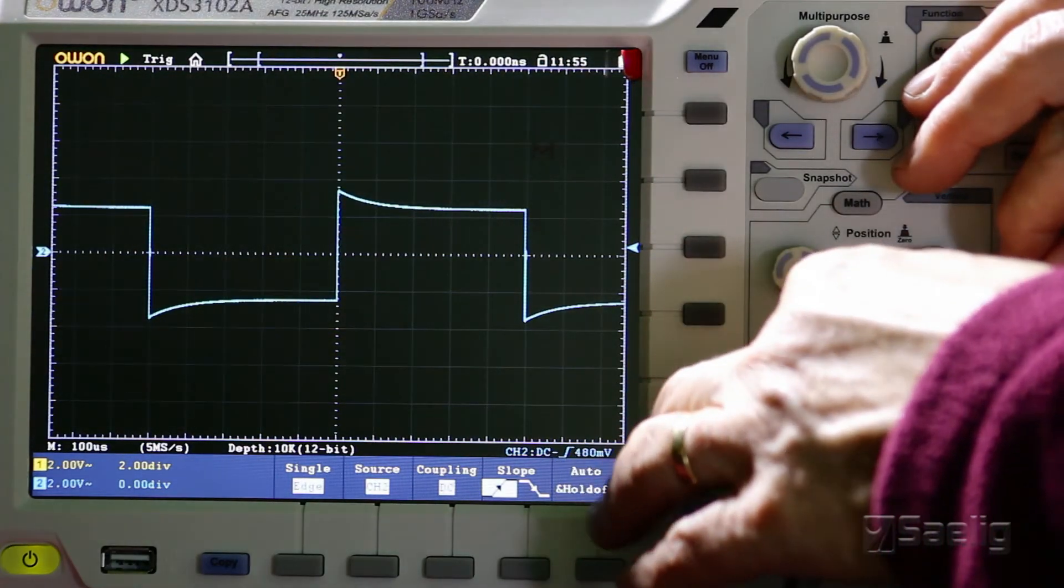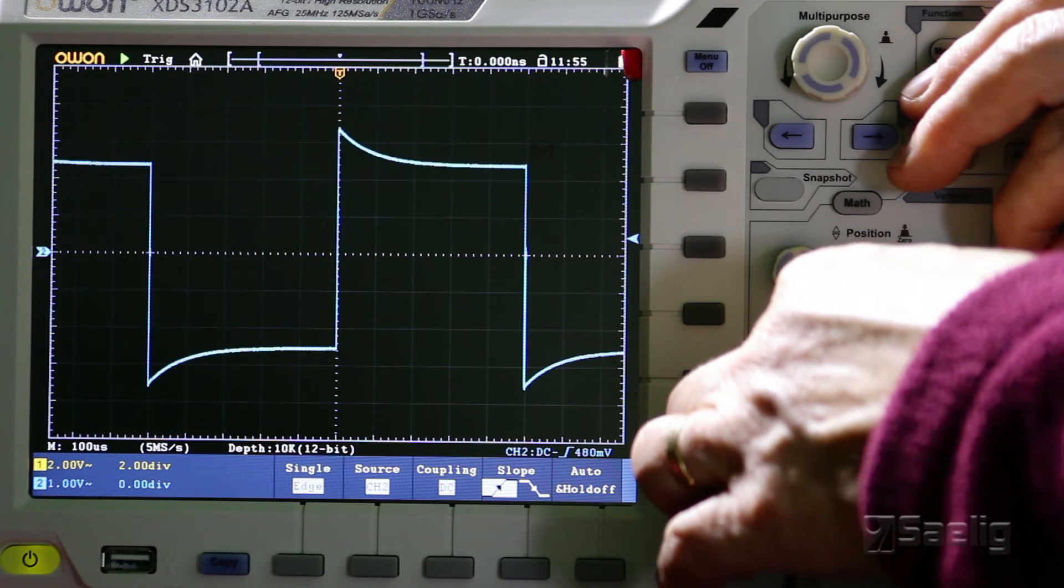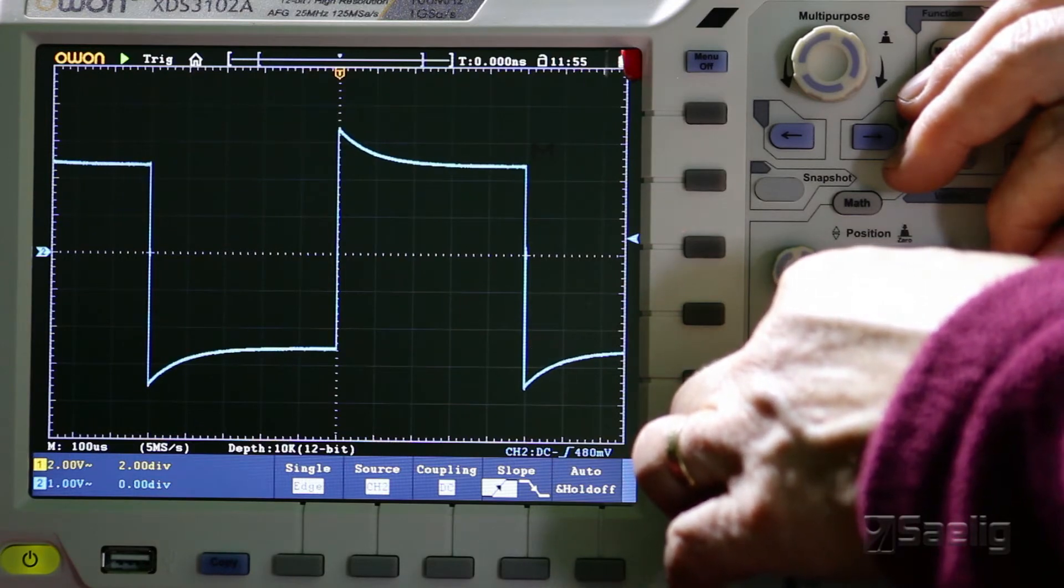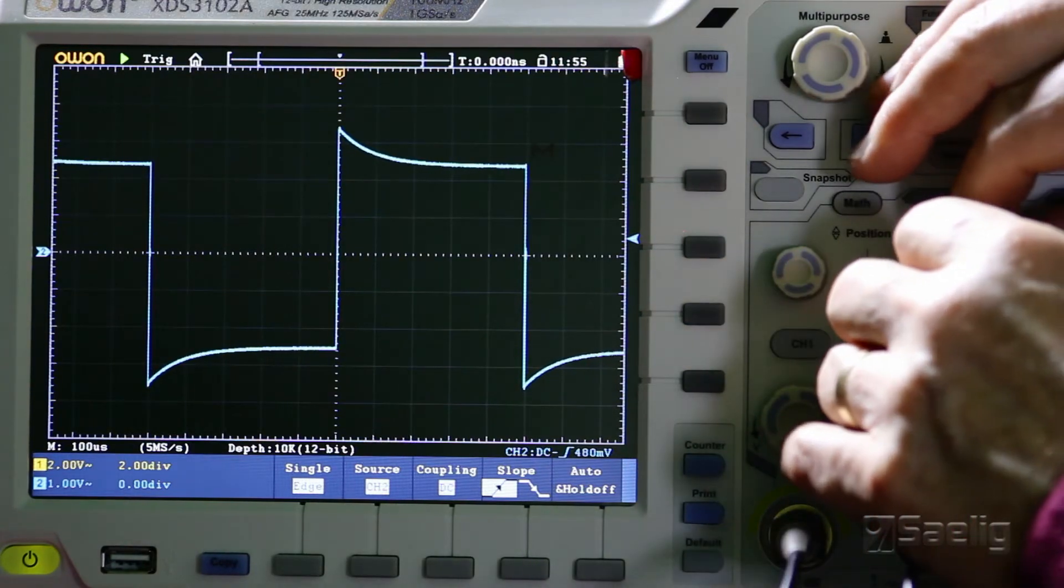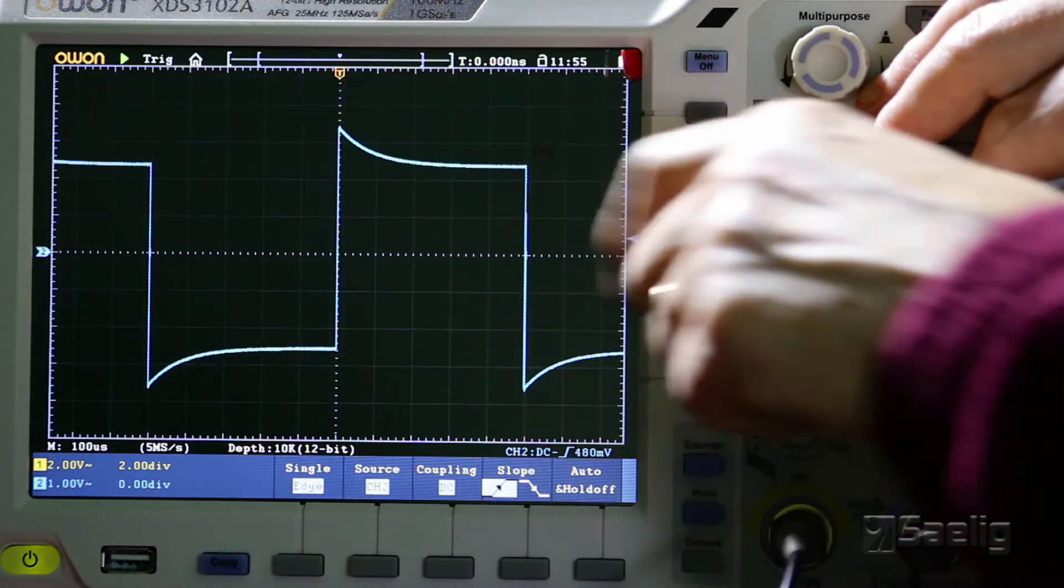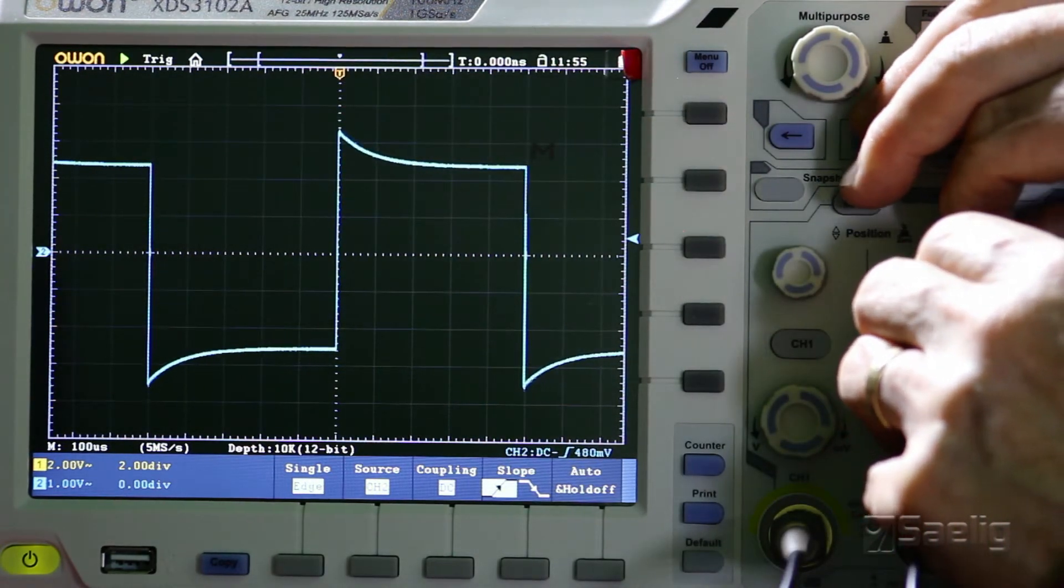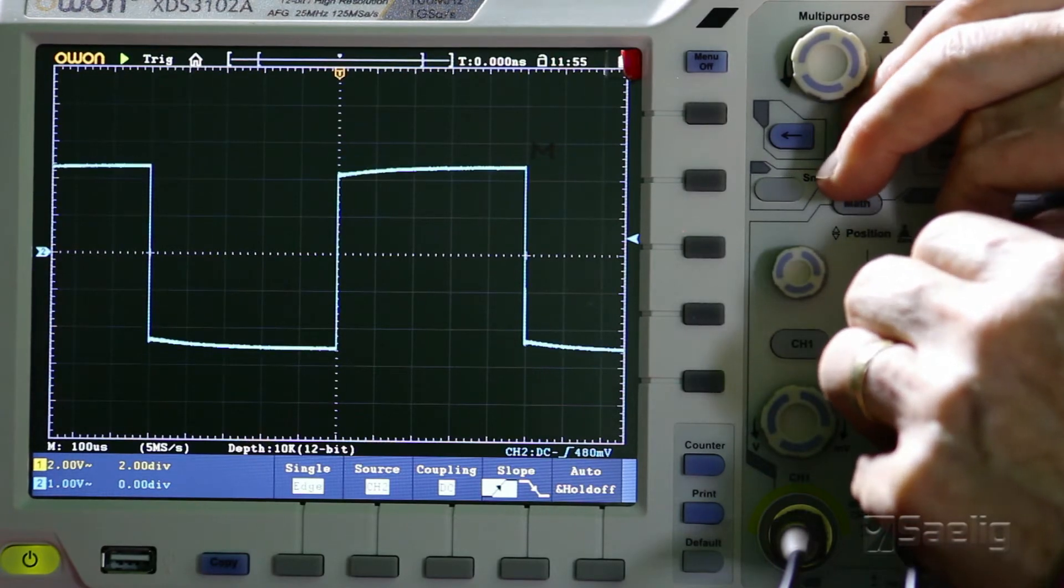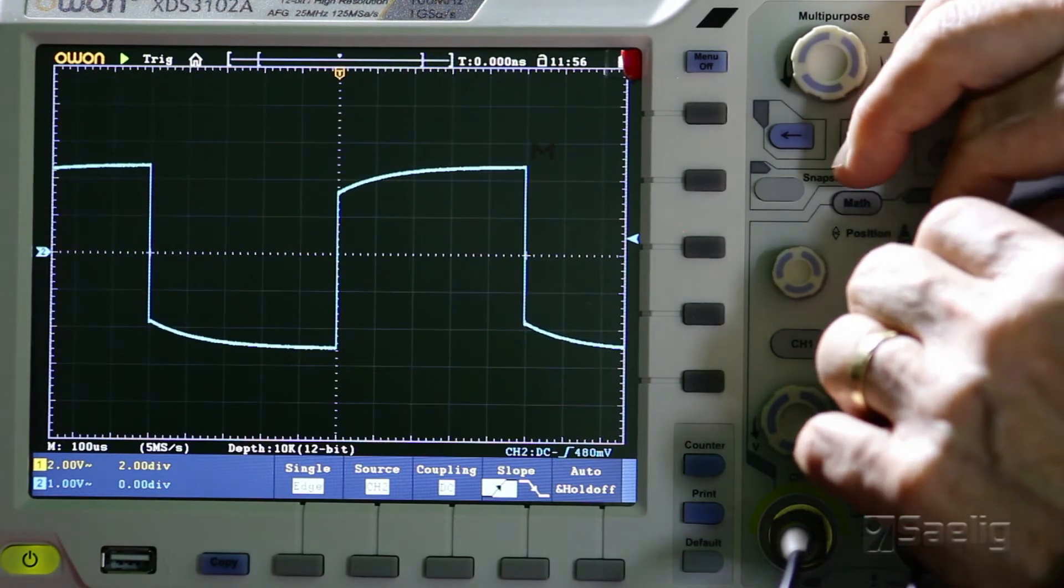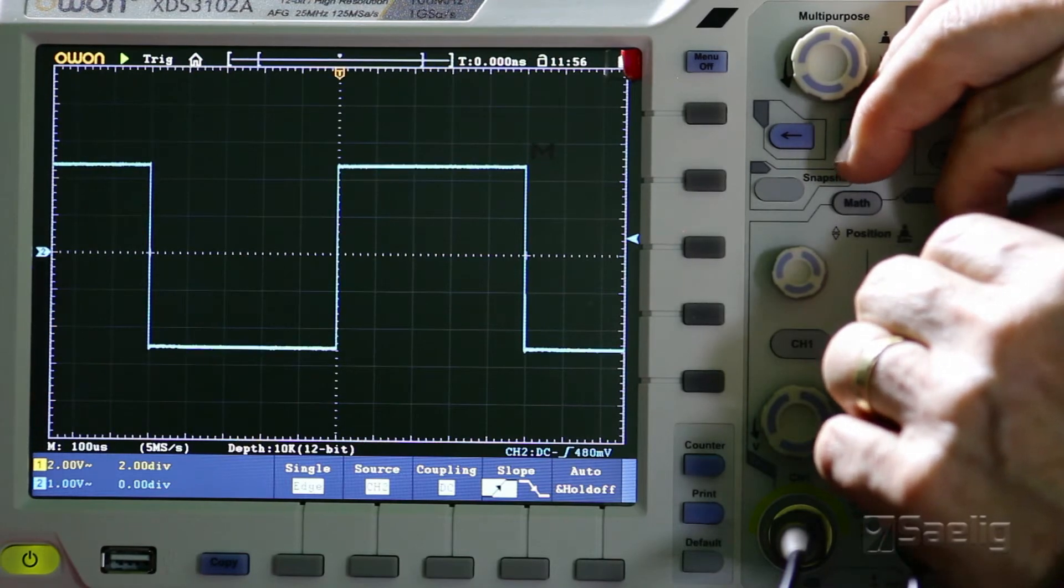It helps to increase your amplitude display a little bit here so that you can see the wave shape that we're going to try to null out here. As we adjust the probe, our compensation capacitor here, you can see that we can change the response of the waveform right here.